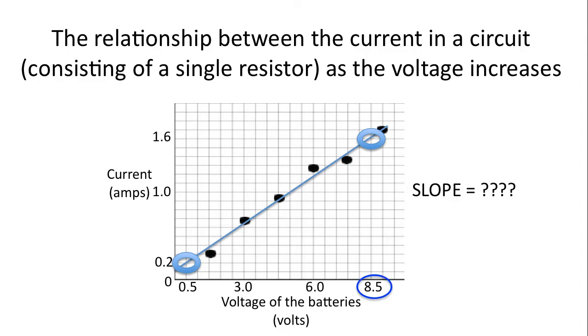Again, why have I chosen that specific point? Well, the x value is easily read to be 8.5 volts. And the y value is easily read to be 1.6 amps. Again, these points do not have to be data points and for the points I chose today, they are not data points, but they have to be on the line.